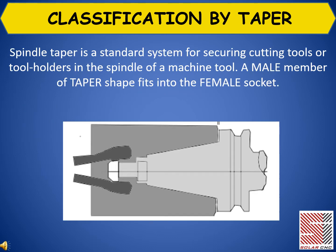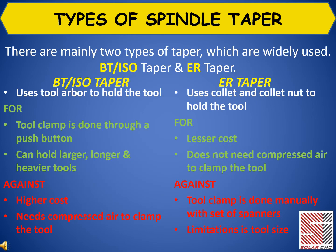Classification by taper. Spindle taper is a standard system for securing cutting tools or tool holders in the spindle of a machine tool. A male member of taper shape fits into the female socket. There are mainly two types of taper which are widely used: BT or ISO taper, and ER taper.